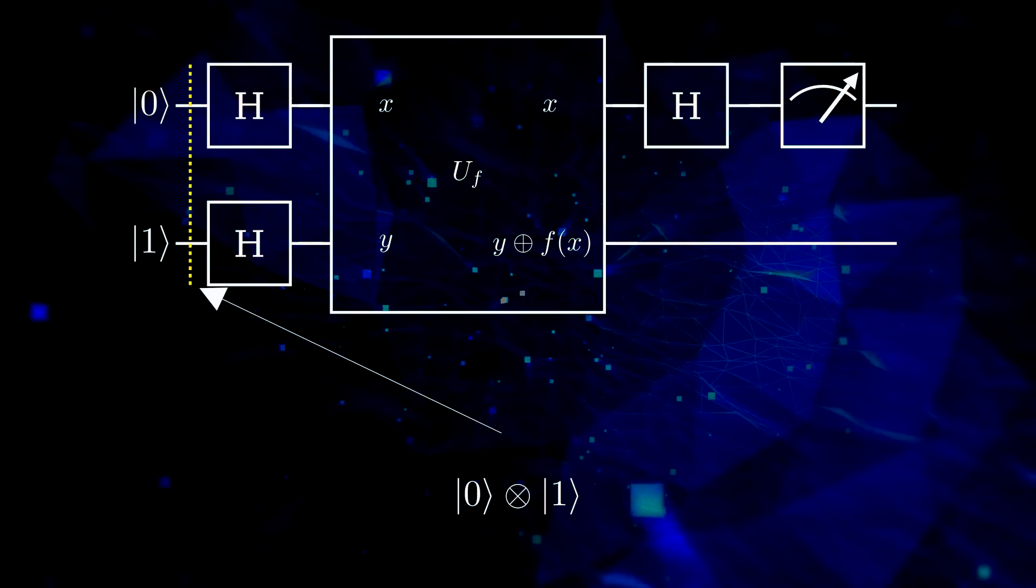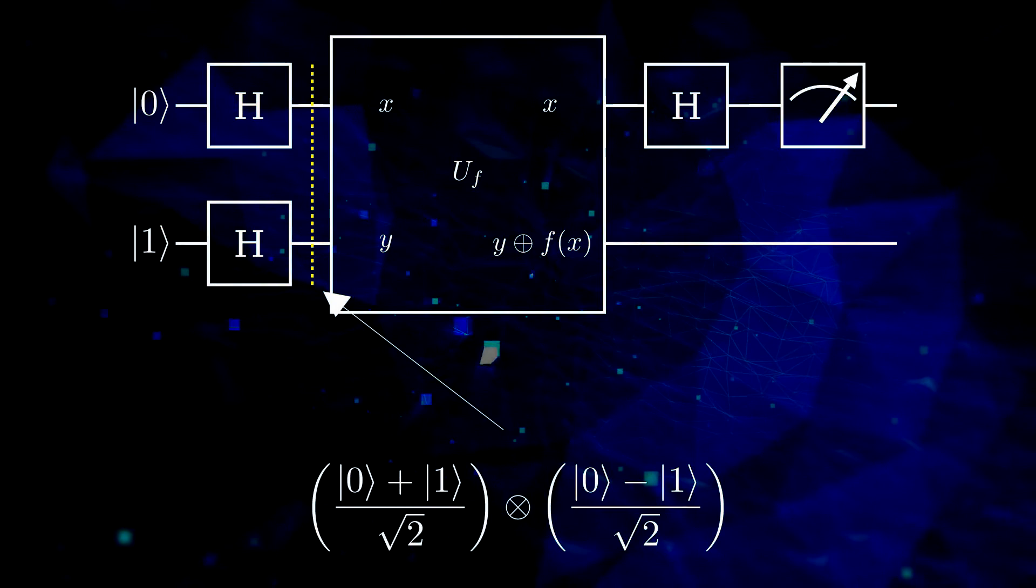After applying the Hadamard gates, we get a new state. This is a tensor product of two states that are superpositions of the basic states.